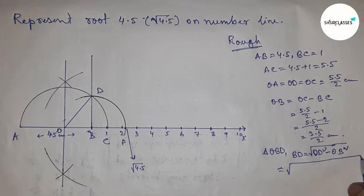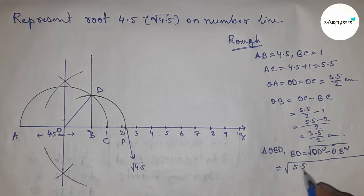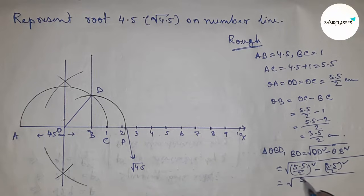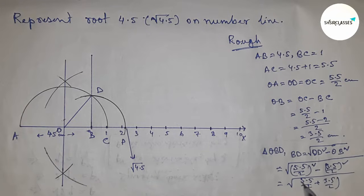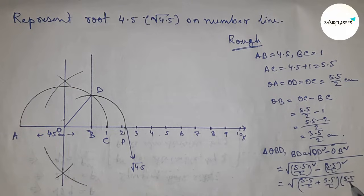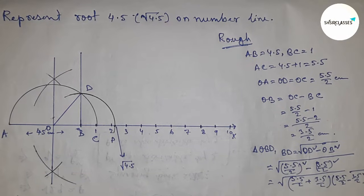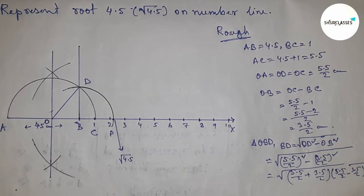5.5 by 2 and base equal to 3.5 by 2. So applying the formula of a squared minus b squared equals a plus b and a minus b. So applying the formula here. Next, calculating this.